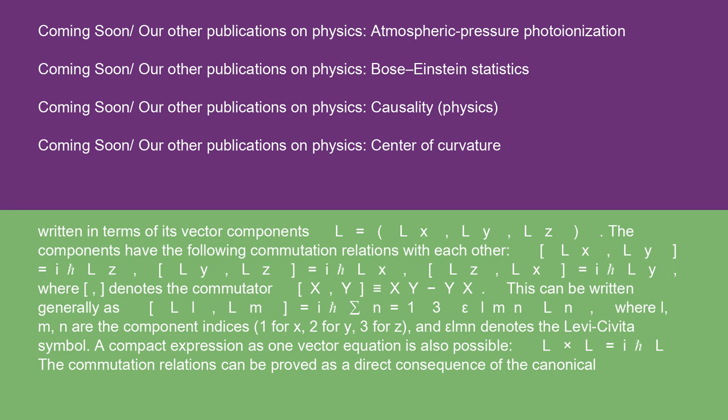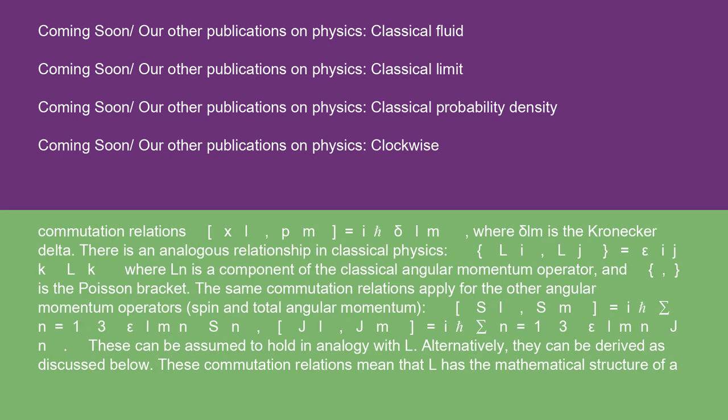This can be written generally as [Ll, Lm] = iℏ Σ(n=1 to 3) ε_lmn Ln, where l, m, n are the component indices (1 for x, 2 for y, 3 for z), and ε_lmn denotes the Levi-Civita symbol. A compact expression as one vector equation is also possible: L × L = iℏL. The commutation relations can be proved as a direct consequence of the canonical commutation relations [xl, pm] = iℏδ_lm, where δ_lm is the Kronecker delta.